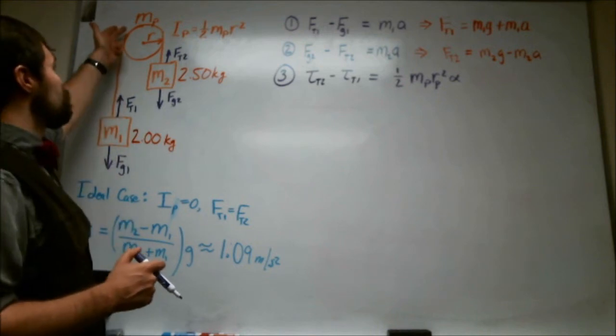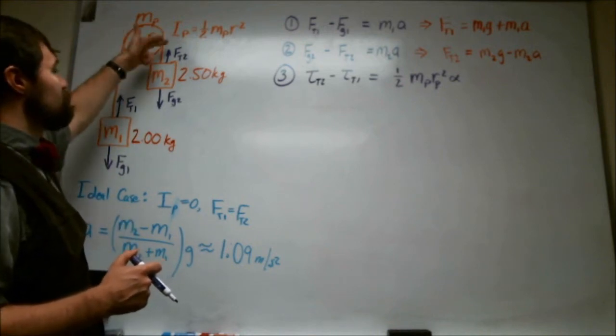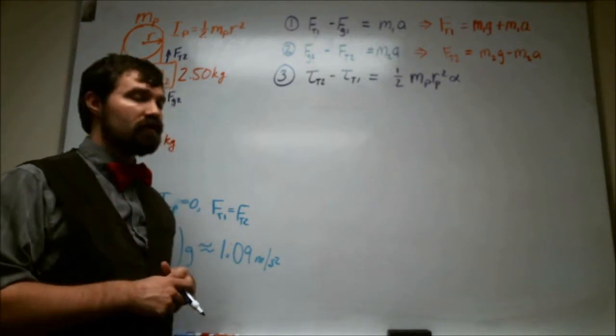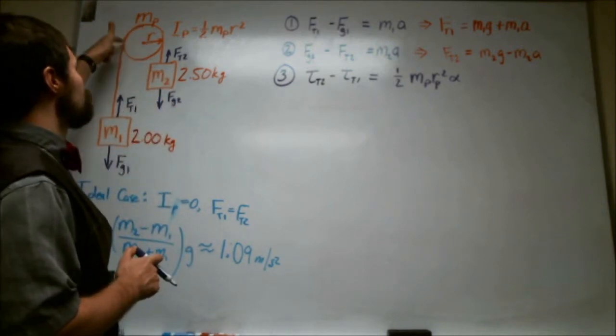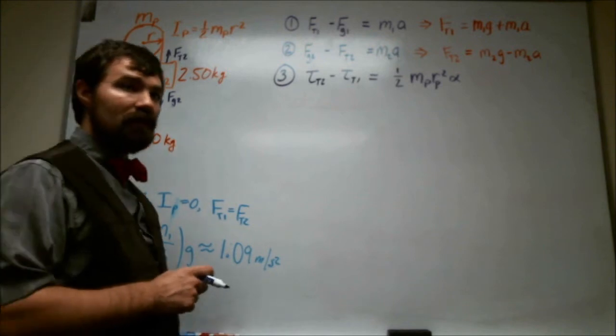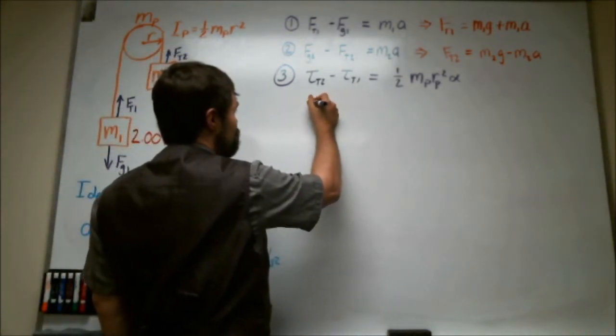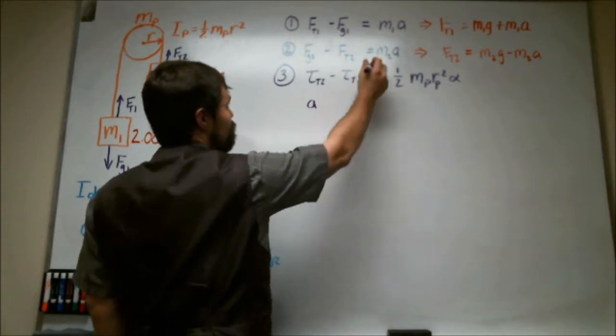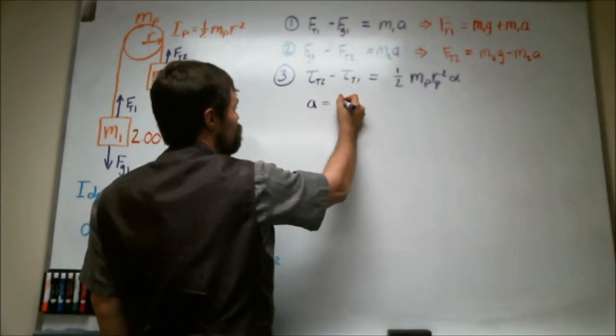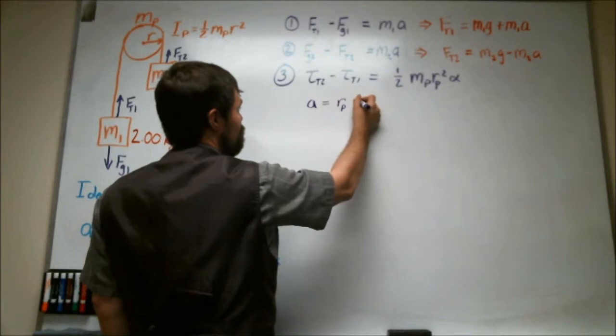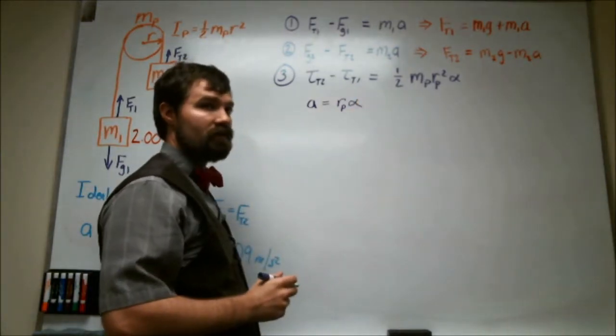And so that string's acceleration is basically going to be a tangential acceleration of a point on this rotating circle. And so that basically means that the acceleration that we're trying to find is equal to the radius of the pulley times the angular acceleration of the pulley.